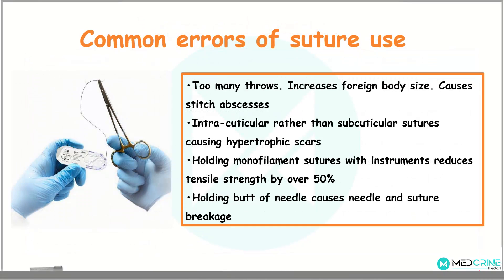What are the common errors of suture use? Too many throws increase the foreign body size and cause stitch abscesses. Intracuticular rather than subcuticular sutures are known to cause hypertrophic scars. Holding monofilament sutures with instruments reduces their tensile strength by over 50%, and holding the butt of the needle causes needles and sutures to break.